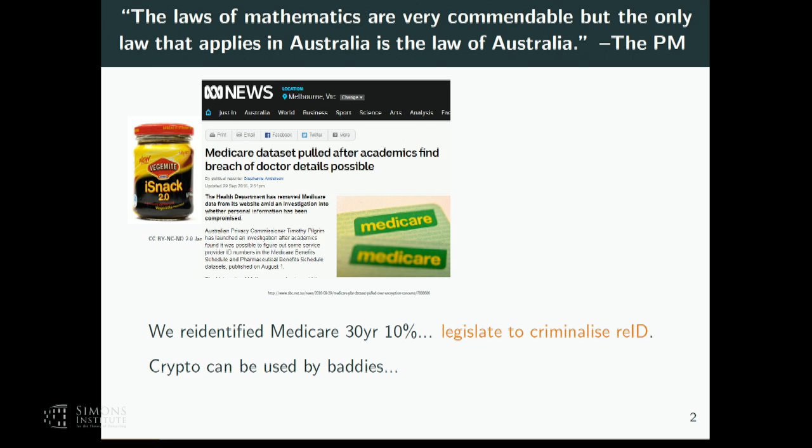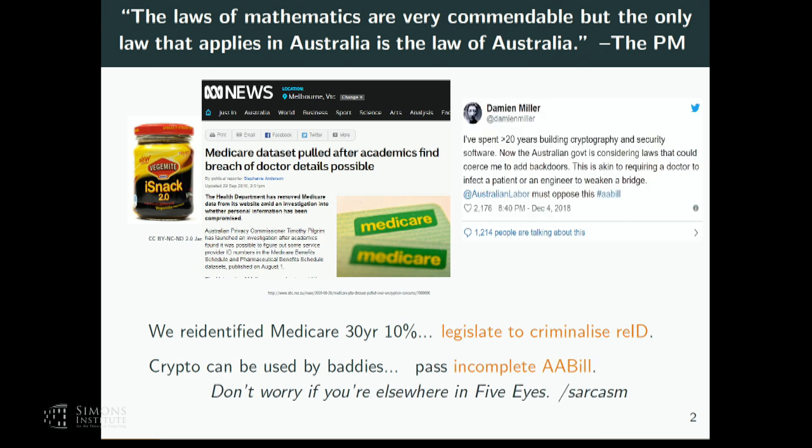This was the quote by the then prime minister: 'The laws of mathematics are very commendable, but the only law that applies in Australia is the law of Australia.' So if we legislate that this is not a backdoor — that somehow we're not breaking maths — that we're only going to give access to private data for some people but not everyone, then that's true. Of course it's not. Unfortunately, that actually did pass. And if you're in the US, Canada, UK, or New Zealand, it might affect you too.